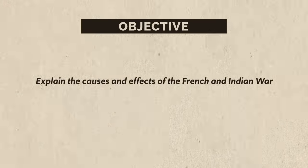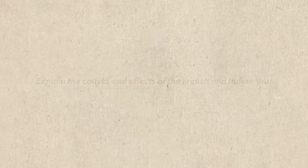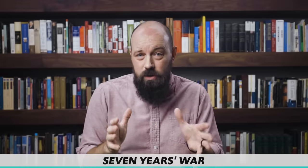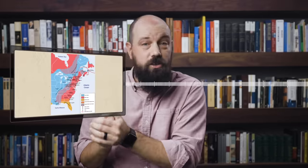Let me tell you what we'll be trying to accomplish in this video. Basically, we're just trying to explain the causes and effects of the French and Indian War. So let's start with the causes. The first thing you need to know is that the French and Indian War was actually a smaller conflict in the context of a much larger global conflict between the British and the French called the Seven Years' War. The Seven Years' War was a worldwide conflict, and the French and Indian War was a small part of that conflict which occurred on American soil.